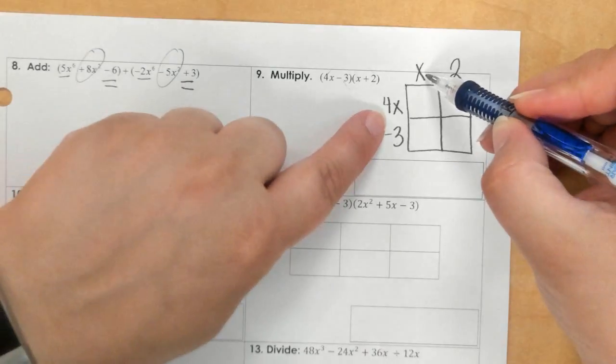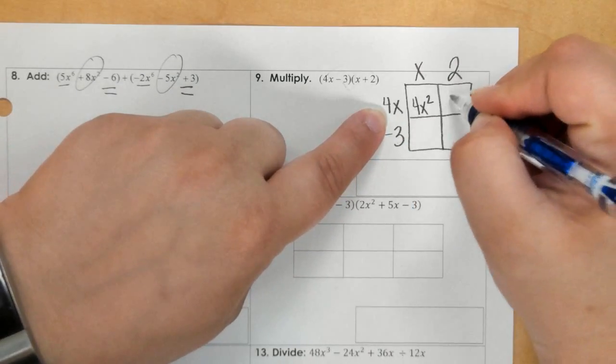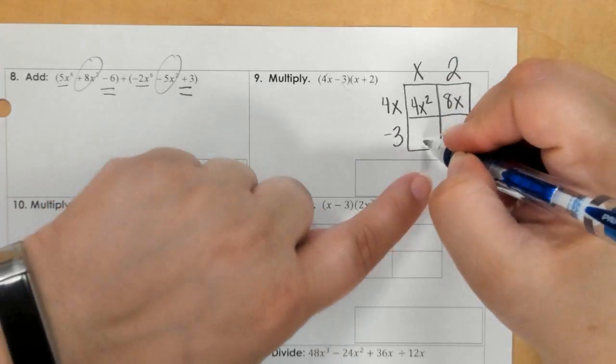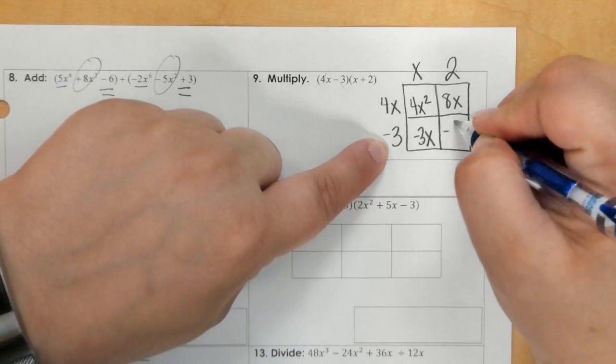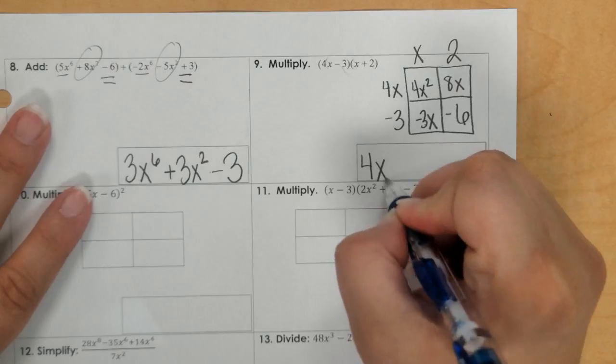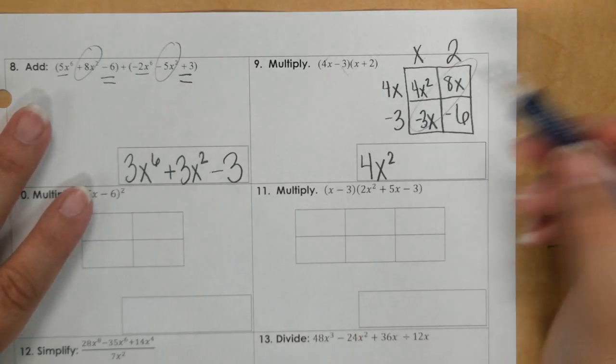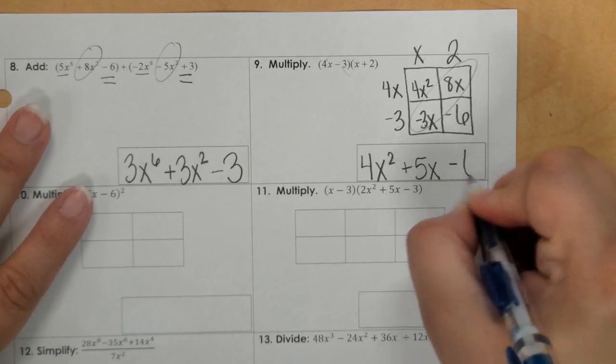So when we multiply 4x and x, we get 4x squared. Then we have 8x, then negative 3x, and then this becomes negative 6. So 4x squared comes down first. These can combine to make 5x, and then we bring down our minus 6.